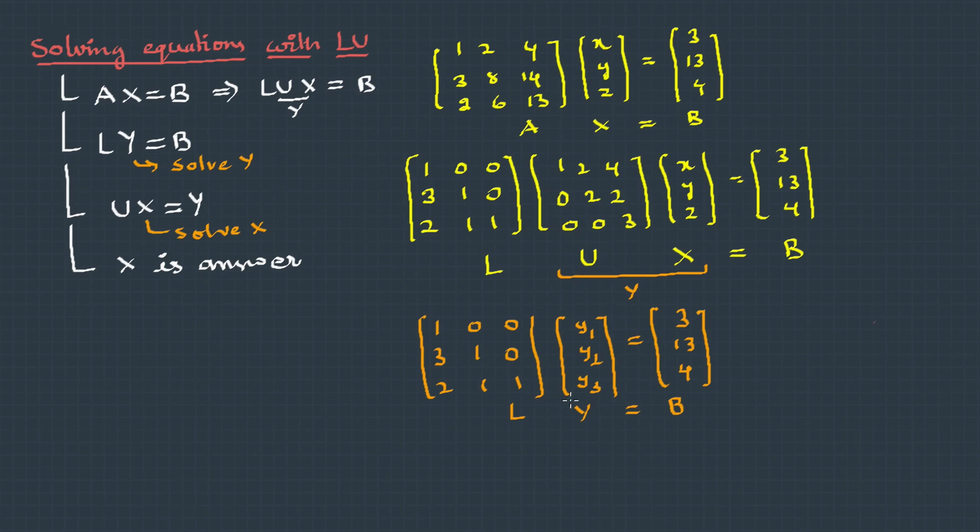Then we need to solve for Y. So just multiply this. The equations will be Y1 equals 3, then 3Y1 plus Y2 equals 13, then 2Y1 plus Y2 plus Y3 equals 4. So we already have Y1. The matrix Y is basically Y1, Y2 and Y3. Y1 we already know is 3. Then substitute this into this and we can find out Y2, which is 4. In the same way, if we substitute Y1 and Y2 in this, we get Y3 and it is minus 6. So we got Y.